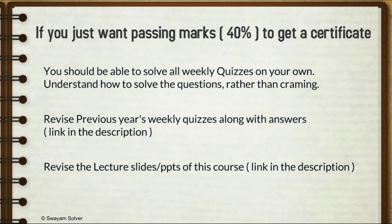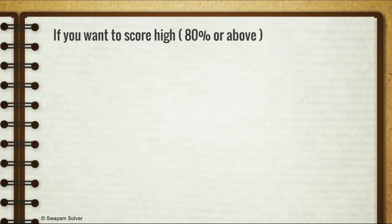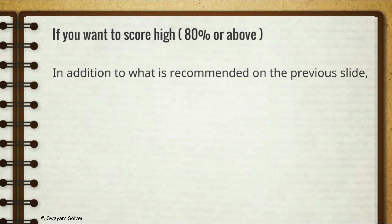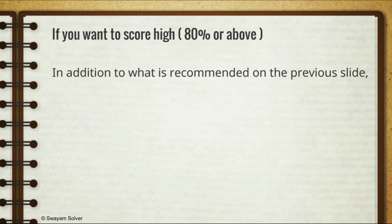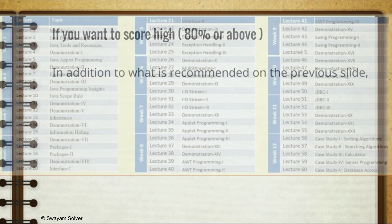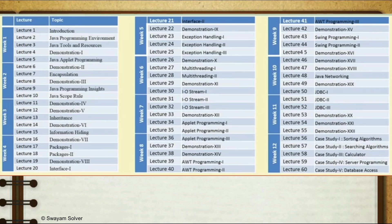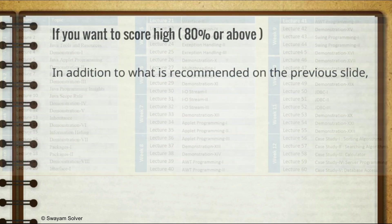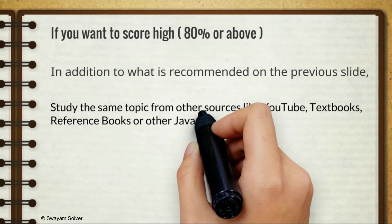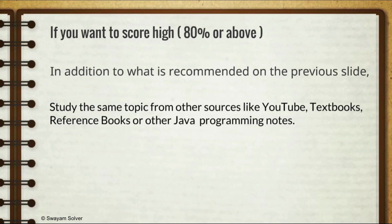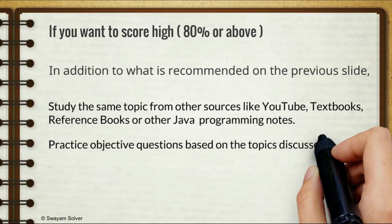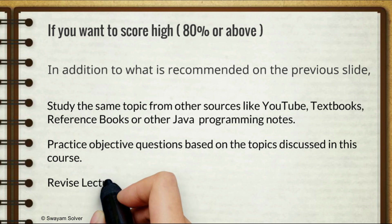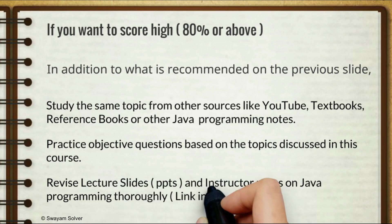Now if you want to score high in the exam like you want elite or gold certificate, then this is what you should do. In addition to solving all these quiz assignments, previous year assignments, and revising lecture slides, what you can do is note down the topics discussed in the course which you can get from the lecture slides and study all these topics from some other source like YouTube or some reference books. You can try to practice some objective questions based on these topics of Java programming covered in this course. Practicing all these things will give you more knowledge so that you can score high in the exam.